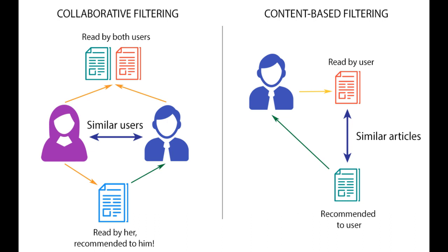Recommender systems as a field have been around for a long time. Amazon and Netflix are two of the companies that pioneered this field. They're not the only ones, but they have invested — and are still investing — huge amounts of money to improve recommender systems. There are various ways to achieve this goal. In brief, there are three main approaches to recommendations: content-based filtering, collaborative filtering, and supervised learning.